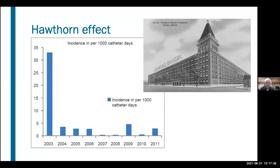The Hawthorne effect — originally observed at the large Western Electric Company plant in Chicago — noted that if you started to measure something, the incidence of it went down. Starting around 2003, various hospitals began to look at their rates of catheter infections and try to control them, which has brought the numbers down significantly over the last almost 20 years. Our hospital in the early 2000s had a rate of between 9 and 10 catheter infections per thousand days; it's right around one now and would be lower.